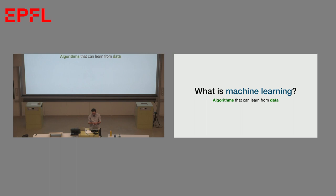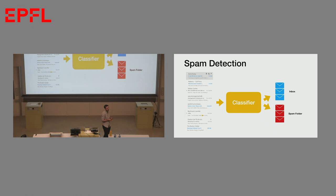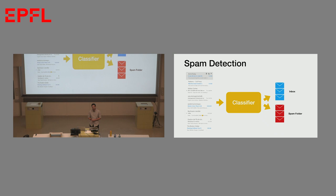So first, what is machine learning? I took this slide from Martin's inaugural lecture. Machine learning is really an algorithm which will learn from data. You have a lot of data and you want to learn one algorithm. One of the most famous examples could be spam detection — you have a lot of emails, some are good emails, some are spam, and you want to learn a classifier to detect whether a new email is good or spam.